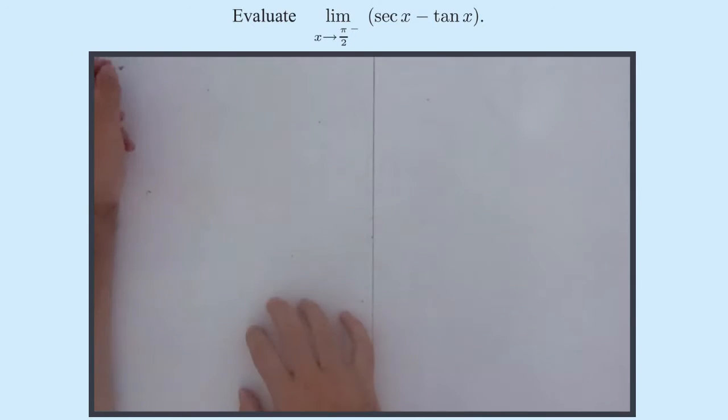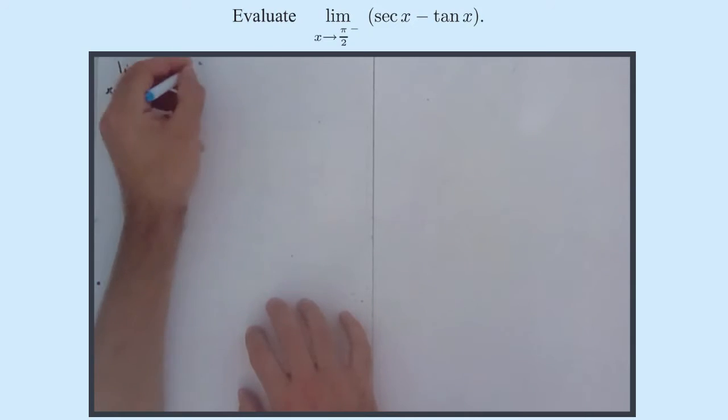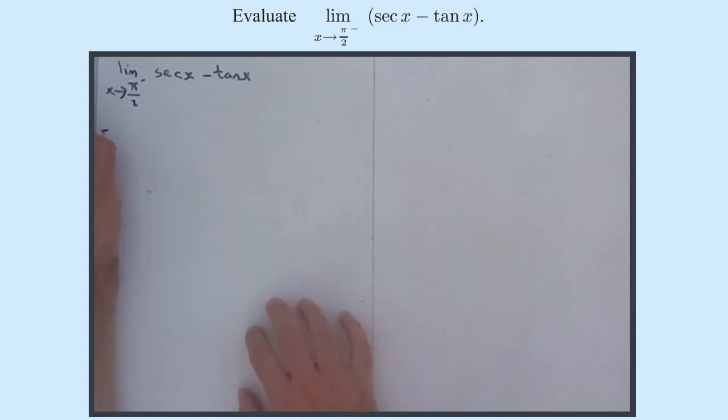Let's say the limit as x approaches pi by 2 from something less than pi by 2 of sec x minus tan x equals, or if we just write down the definitions of those, equals the limit as x approaches pi by 2 from something less than pi by 2 of...